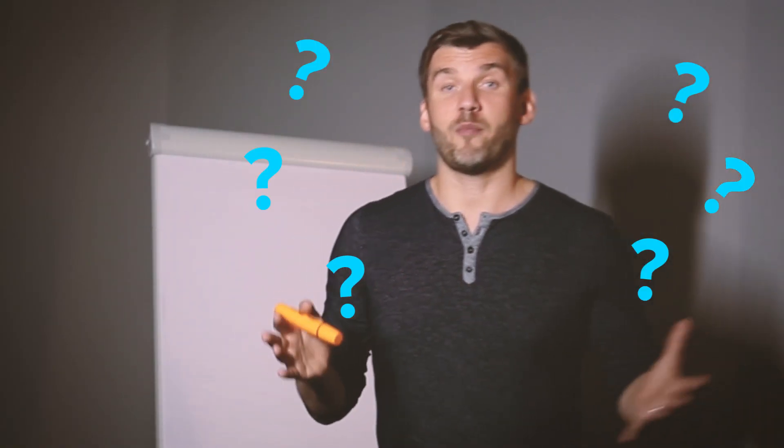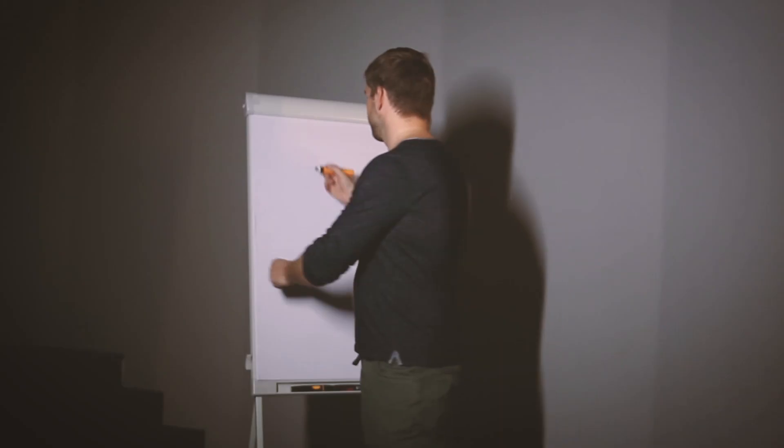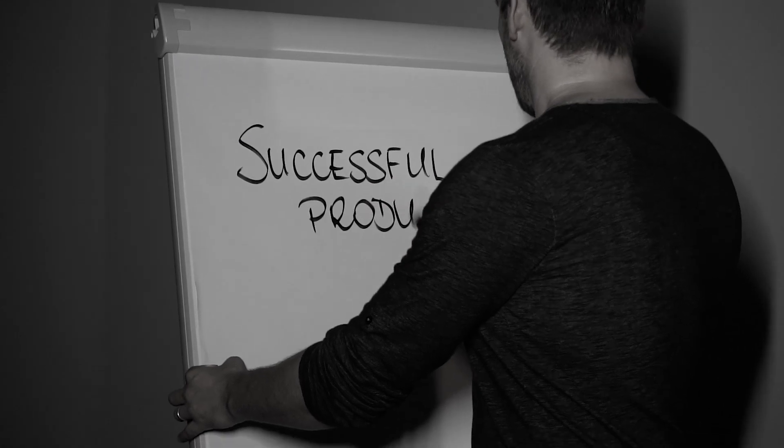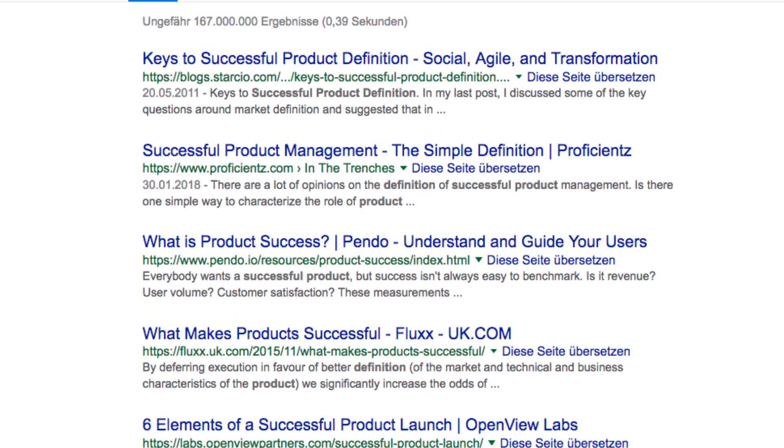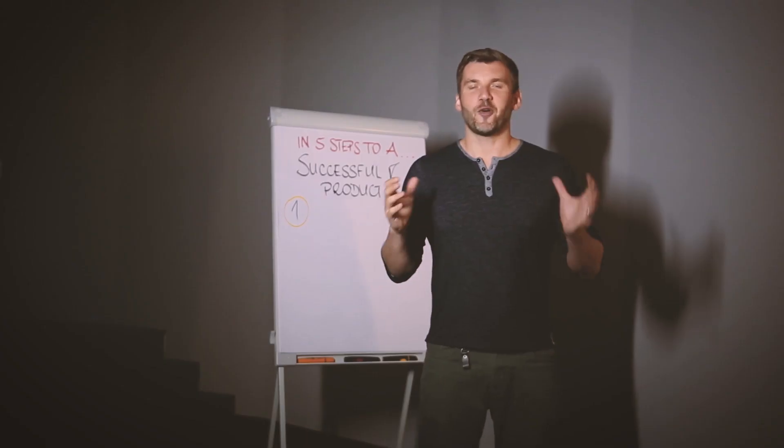So you might ask yourself: what makes a product successful? When you look for that online, you will find a lot of experts providing extensive lists of criteria, telling you that if you meet these criteria, you'll end up with a successful product. For me, there was always something missing — that's why I decided to make this video. I want to share our experiences and learnings, not only from our own failed product, but also from all the concepts that we were part of developing with the help of Design Sprints.